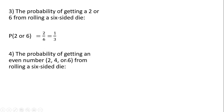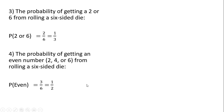Number 4: the probability of getting an even number — 2, 4, or 6 — from rolling a 6-sided die. We can get this occurrence from 3 possibilities, so it's 3 divided by 6, or 1 half.